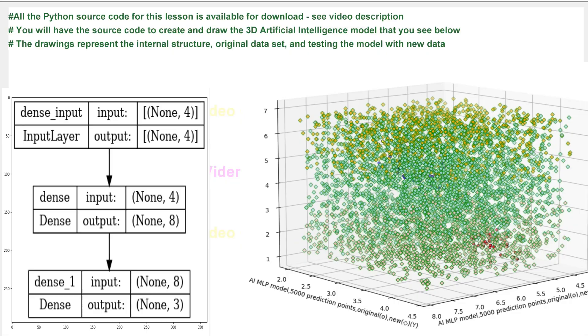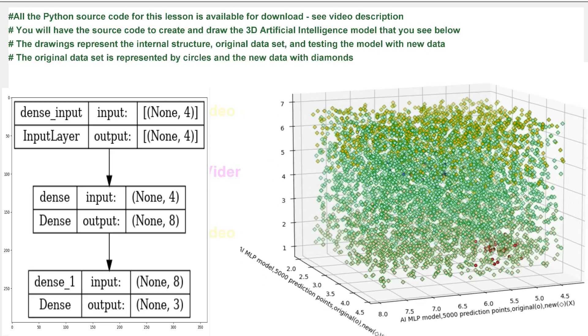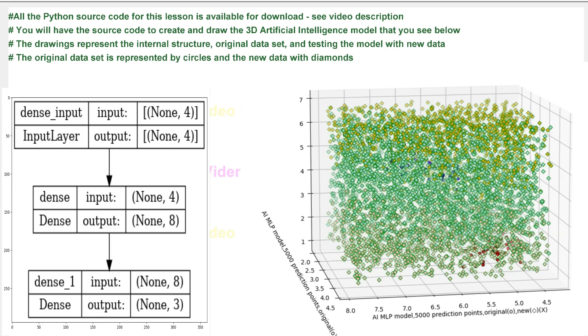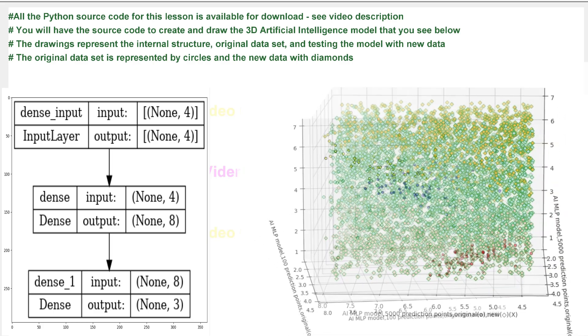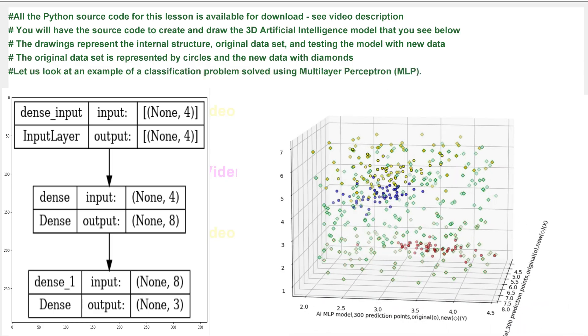The drawings represent the internal structure, original dataset, and testing the model with new data. The original dataset is represented by circles and the new data with diamonds.